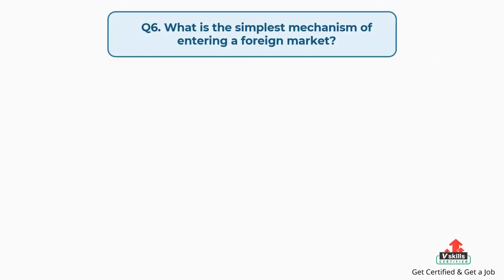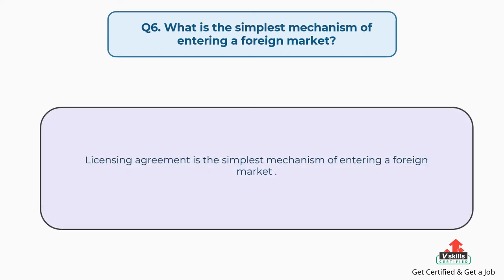Question number six: what is the simplest mechanism of entering a foreign market? The answer is: a licensing agreement is the simplest mechanism of entering a foreign market.